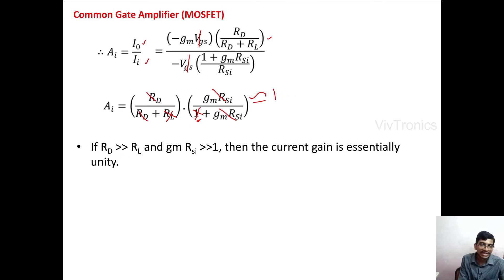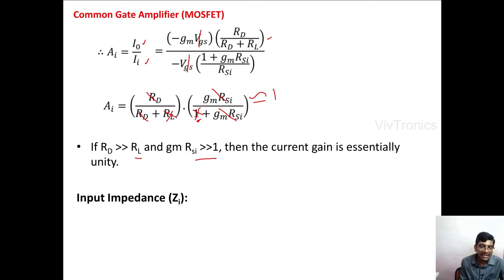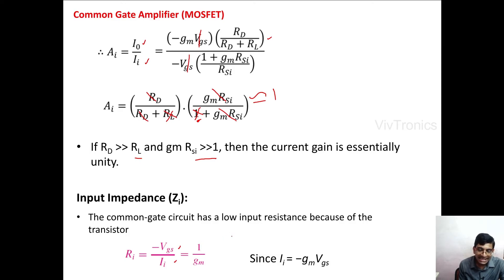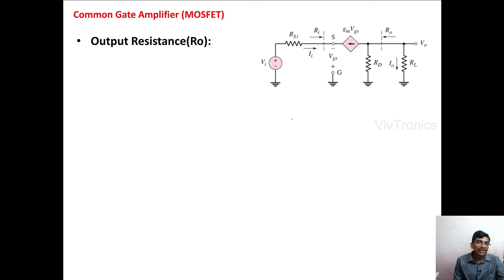Assuming Rd >> RL and gm·Rsi >> 1, the current gain Ai is approximately equal to unity. The common gate circuit has low input resistance. The input resistance Ri = Vgs / ii. Since ii = −gm·Vgs, substituting gives Ri = −Vgs / (−gm·Vgs) = 1/gm. Therefore the input impedance of the common gate amplifier is 1/gm.